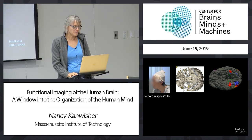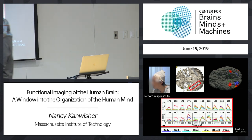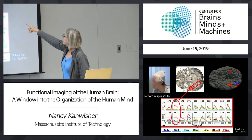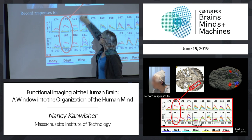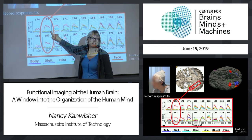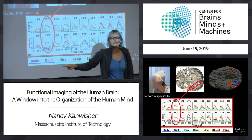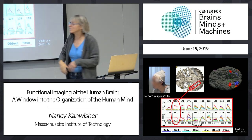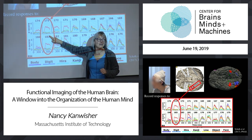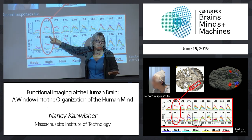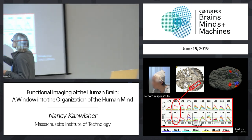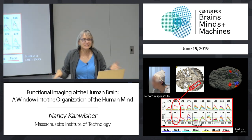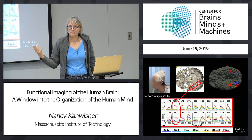This electrode right in the fusiform gyrus shows a time course: faces in red versus other stimuli in all other colors. When you compare this to those bar charts from functional MRI, the selectivity here is much more striking — serious selectivity, no response to anything else. This thing kicks on right around 150 milliseconds after the stimulus comes on. That's complementary to the MRI data — it validates it with a more direct measure of neural activity.